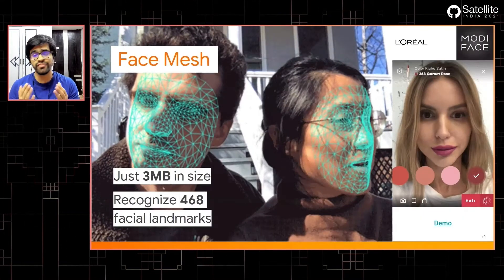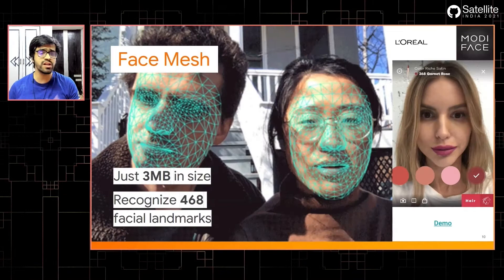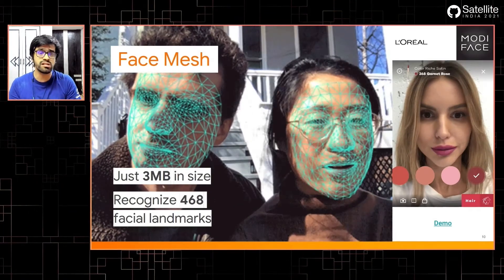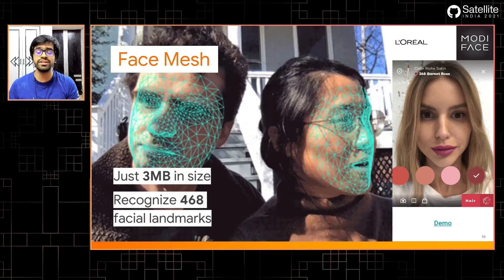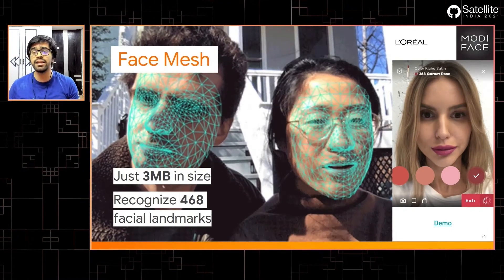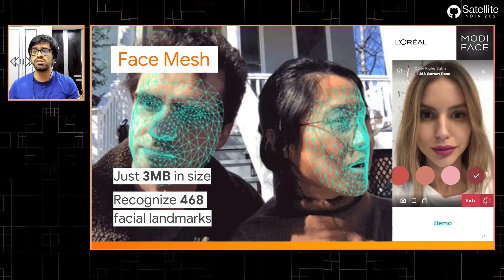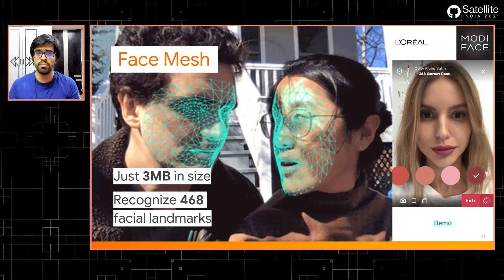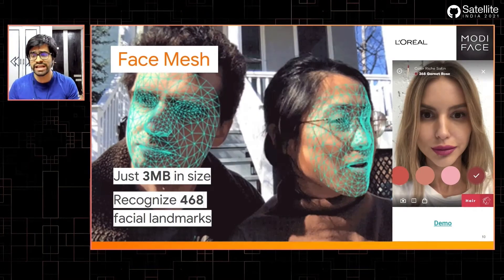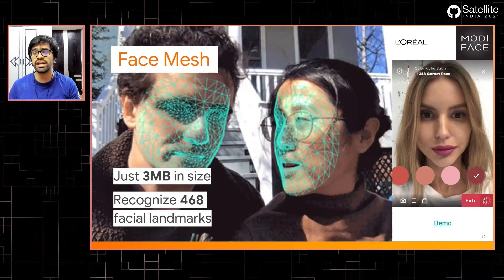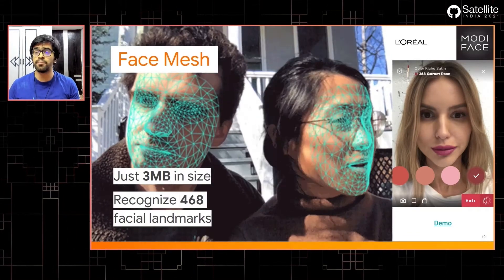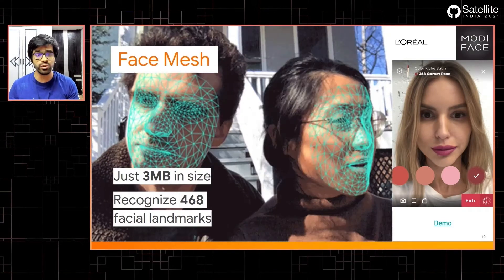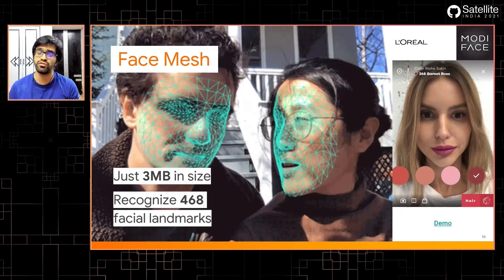Another example is Face Mesh — a model that is just three megabytes in size and recognizes over 468 different landmarks on your face. As you can see, it's really popular and being used right now in production — for example, at L'Oreal, which you can see on the right-hand side — being used in production environments in products that are ready to ship.